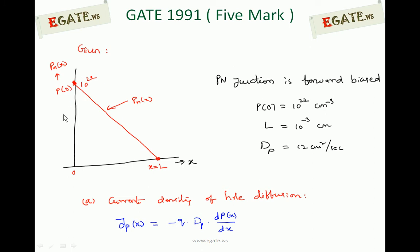The given hole distribution is linear. It starts at X equal to 0 where P(0) equals 10 to the power 22, and decreases linearly towards L. At X equal to L, the value is 0 — the hole concentration becomes 0. So the given information is: PN junction is forward biased, P(0) is 10 to the power 22 per centimeter cube, L is 10 to the power minus 3 centimeters, and diffusion constant for holes is 12 centimeter square per second.